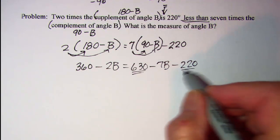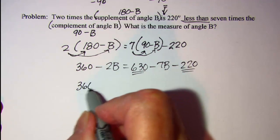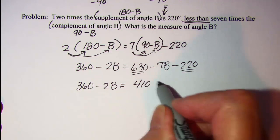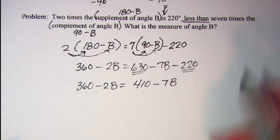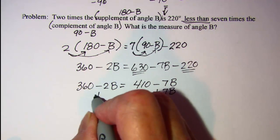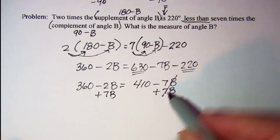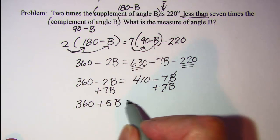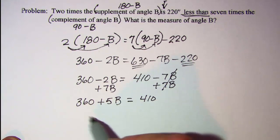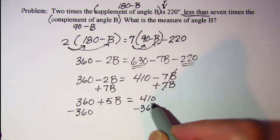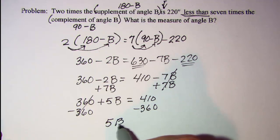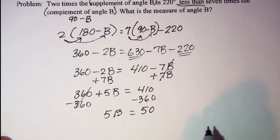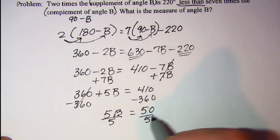We'll combine like terms. On the left side: 360 minus 2B equals 630 minus 220, which gives 410, minus 7B. Let's add 7B to both sides — this will cancel. So I have 360 plus 5B equals 410. Subtract 360 from both sides, leaving 5B equals 50. Divide both sides by 5, and B is equal to 10.